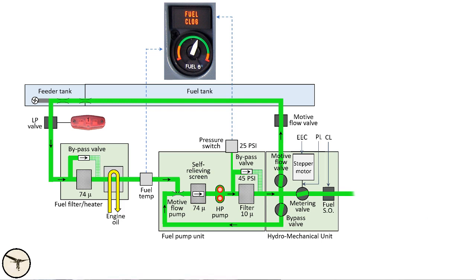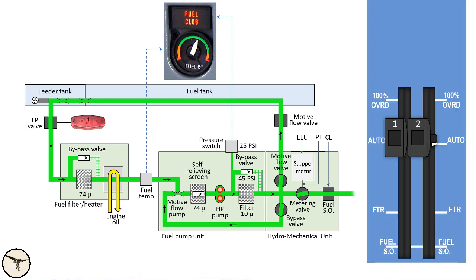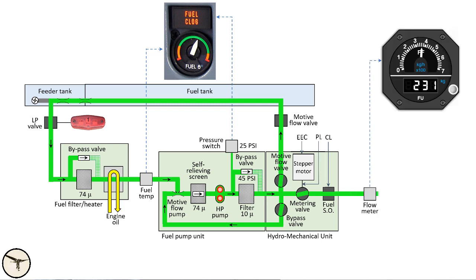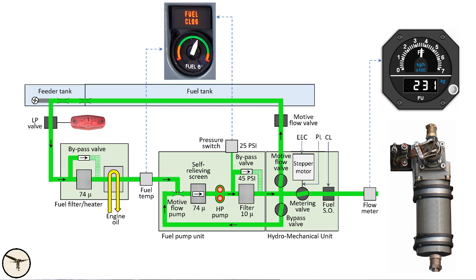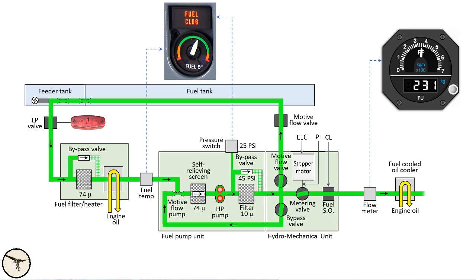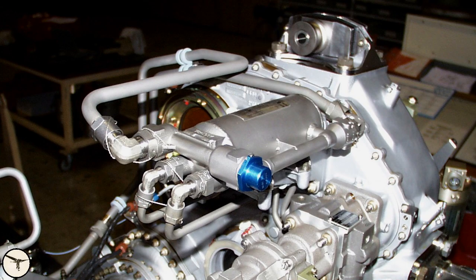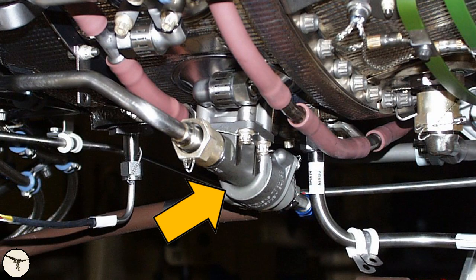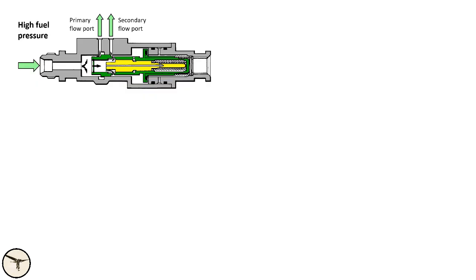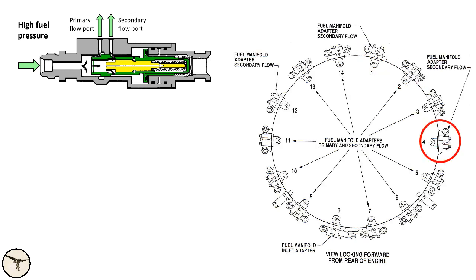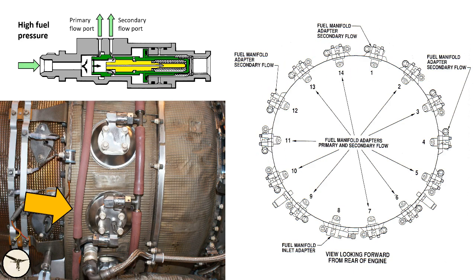At the HMU outlet there is a shutoff valve controlled by the condition lever — open when the condition lever is out of the fuel shutoff position. After the HMU, fuel passes a fuel flow meter consisting of a rotor and capacitor that measures fuel density, allowing the fuel flow indicator to show consumption in kg or pounds per hour. The fuel is then heated again in the fuel-cooled oil cooler, before reaching the fuel divider. When fuel pressure from the HMU is high, the divider allows fuel to exit through both a primary flow port and a secondary flow port. There are 14 fuel nozzles: the primary line supplies 10, and the secondary line supplies all 14.